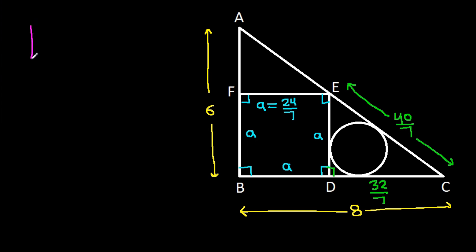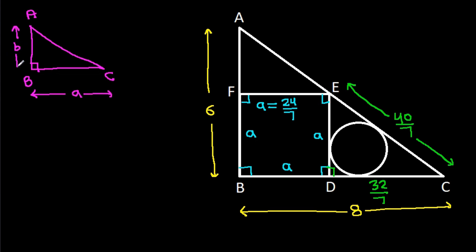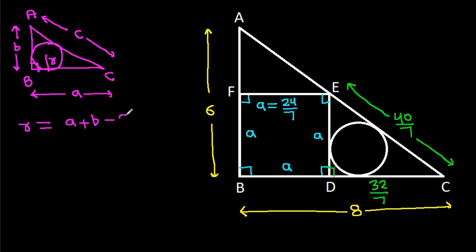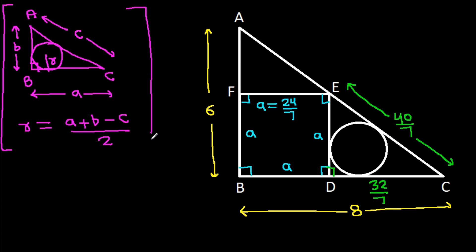Now, in a right-angle triangle with sides a, b, and c, where bc is a, ab is b, and ac is c, the radius of the incircle, r, will be equal to a plus b minus c, divided by 2.